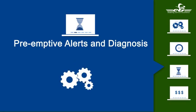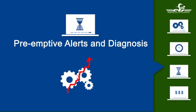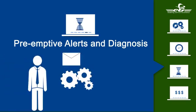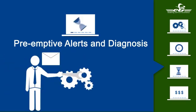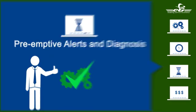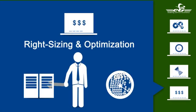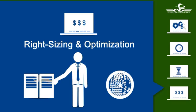EG Innovations performance management solutions automatically learn what normal service behavior looks like. When thresholds are exceeded, the platform sends preemptive alerts to administrators so they can detect and fix problems before users complain.